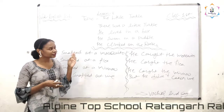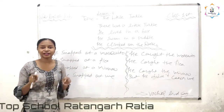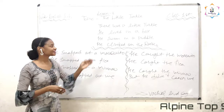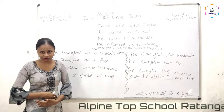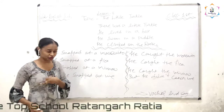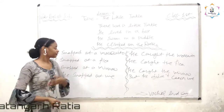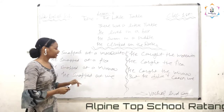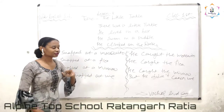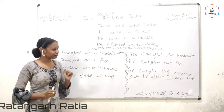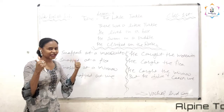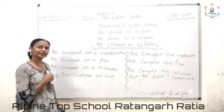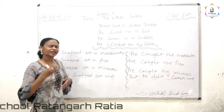So this poem speaks about a little turtle who was staying in a small box. He wanted to swim in the puddle and while swimming he was climbing the rocks. While he was very hungry, he sees first a mosquito, then a small housefly flea, then a minnow — that's a small fish in a pond. He caught the mosquito, the flea, and the minnow, but he did not catch me. This poem was written by Vachel Lindsay.